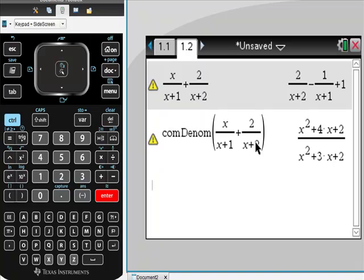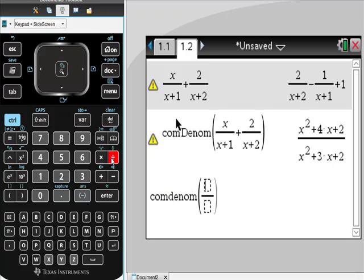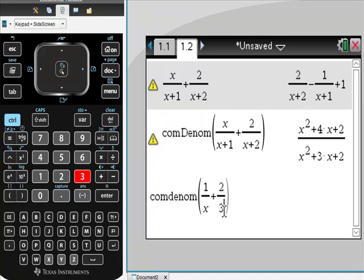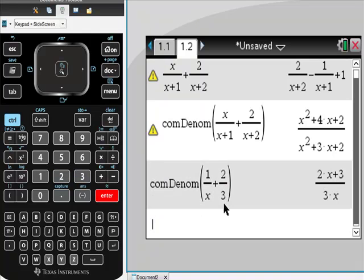Just to do a really simple example so you can see that it's working: 1 over x plus 2 thirds. And there's our answer, the answer that we anticipated. This is just going to save you a load of time.